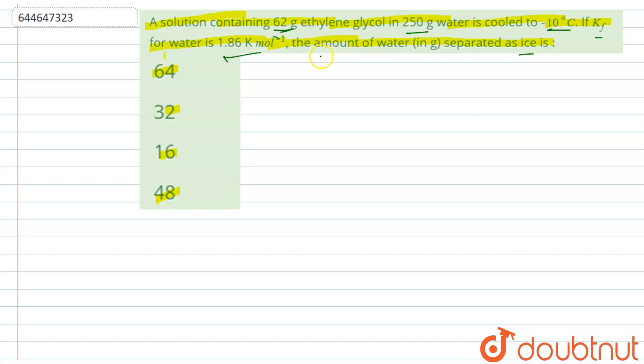So we see that ethylene glycol is a solute here, so this won't get converted into ice at minus 10 degree Celsius. But water will get converted into ice. So we have to calculate the amount of water which is converted as ice or separated as ice in the given question.